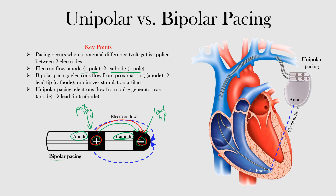With unipolar pacing, the anode is the pulse generator can — this area here. Electrons are flowing from the anode, the positive pole, to the cathode, which is the lead tip. So here's your cathode, the lead tip at the negative end, and the electrons are flowing from positive to negative — from anode to cathode in this direction.